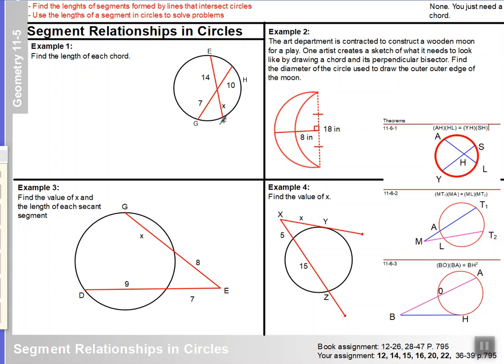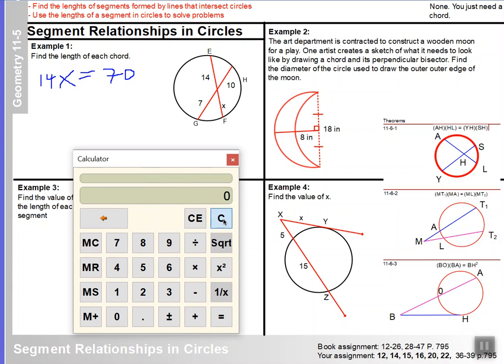So, we're saying this segment, x, times this segment here, 14, is going to equal 70, 7 times 10. So, I'm going to divide 70 by 14. And so, I find that this segment here is 5. Which means that this whole segment here, segment EF, chord EF, is 19. And obviously, GH is 17. It's already given to us. So, let's move on to example two.